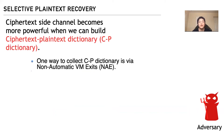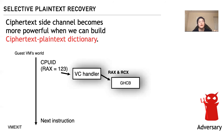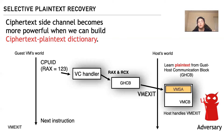One way to build that dictionary uses Non-Automatic VM Exit events, NAE events. NAE events are those that require exposing register state to the hypervisor — for example, CPUID emulation. When a CPUID instruction occurs, a VMM Communication Exception, the #VC exception, is generated by hardware. The #VC handler inside the guest VM copies necessary register state to an unencrypted area called the Guest-Host Communication Block, GHCB, and then triggers a VM exit. The hypervisor emulates the CPUID instruction. At this point, the adversary can learn the plaintext of RAX and RCX from the GHCB.